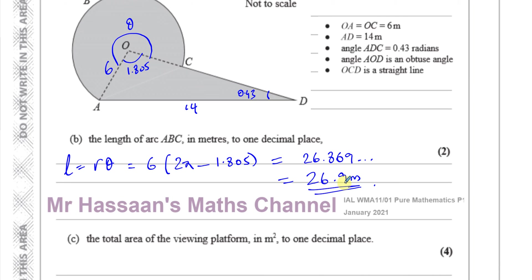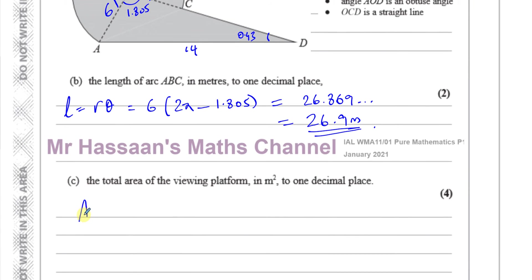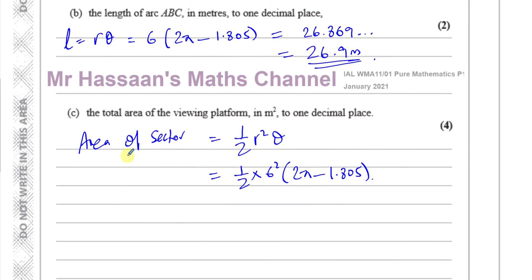And for part C finally, says find the total area of the viewing platform. So we need to have the area of this triangle and we have to have the area of this sector. Let's start with the area of the sector. So we've got the area of the sector, the major sector, which is going to be given by a half r squared theta.